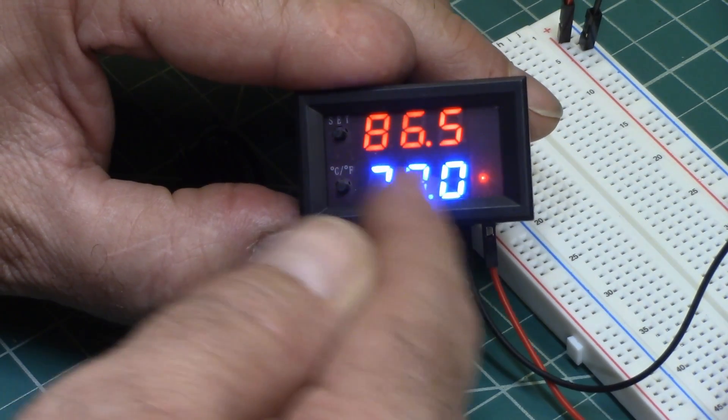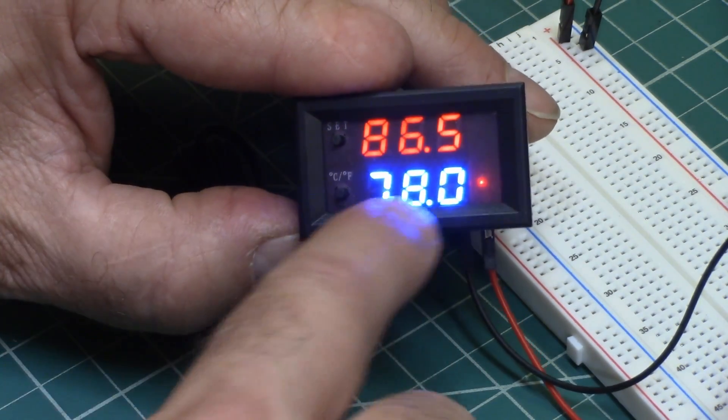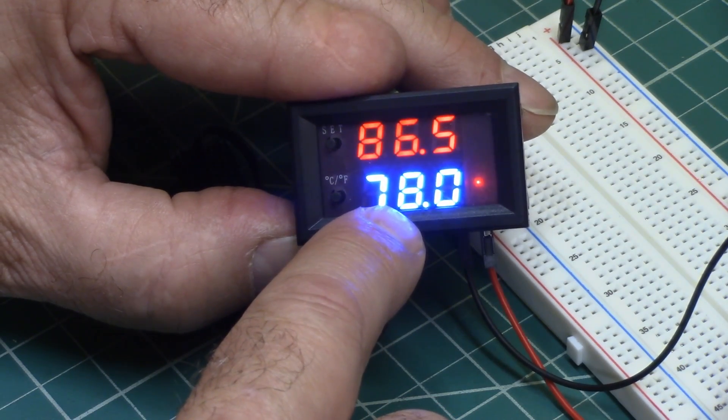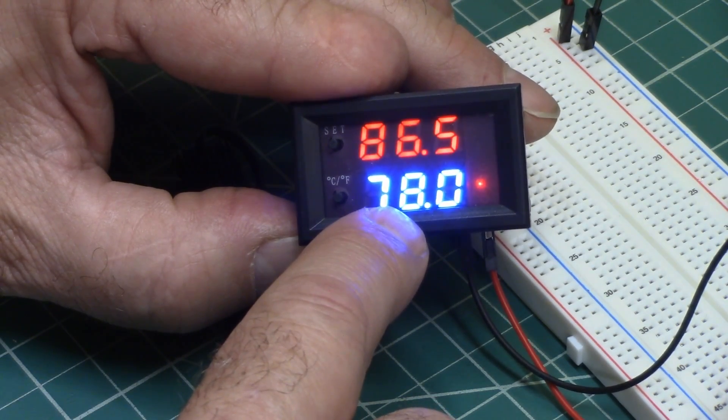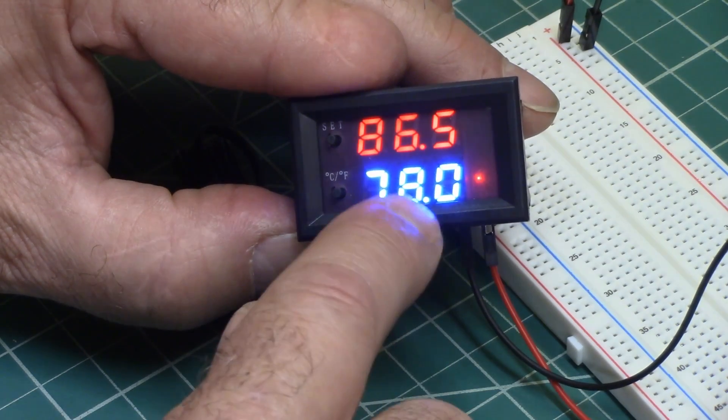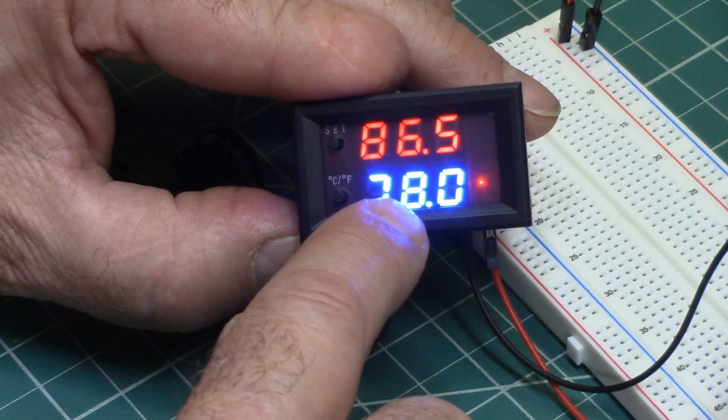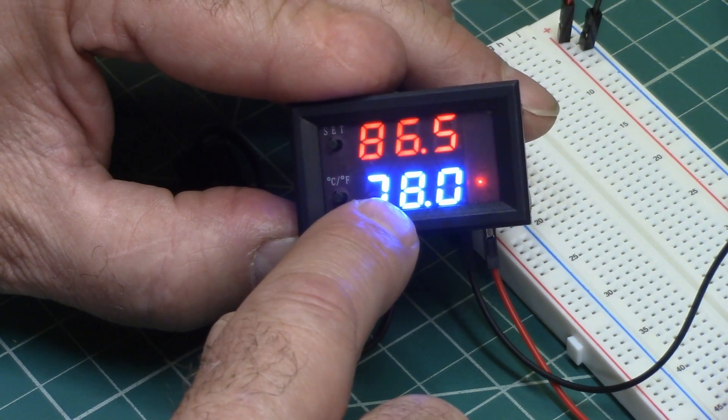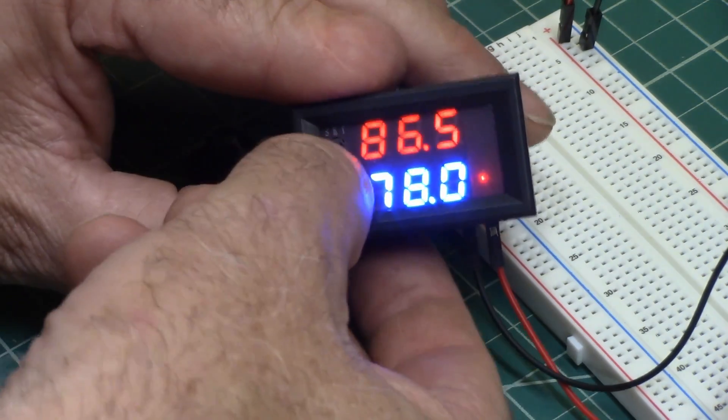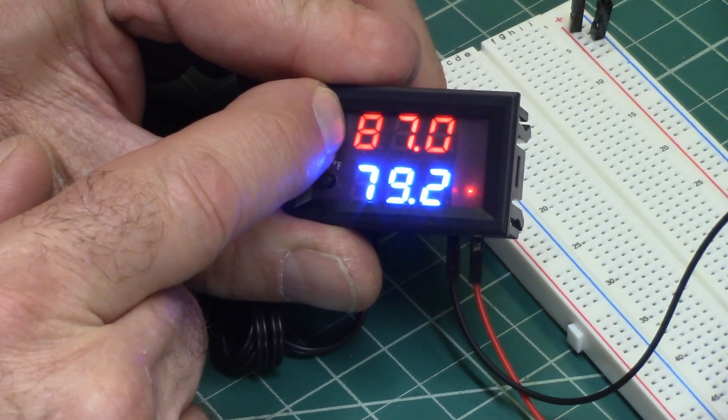So in cooling mode, when the temperature gets hotter than what you've set, it's going to turn the relay on. In heating mode, it's going to turn the relay on when the temperature gets lower than the temperature that you've set. So that's your heating and cooling mode. To get into all the programming, you hold this down for five seconds.